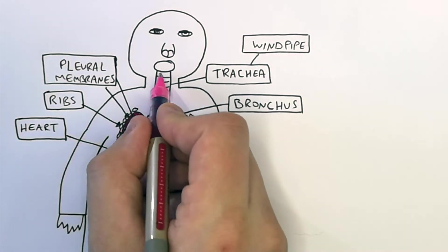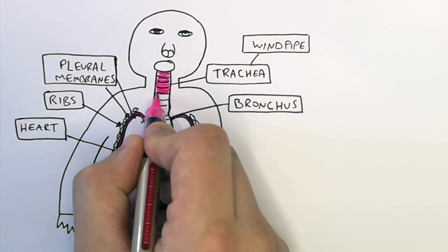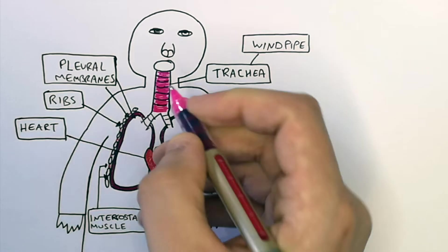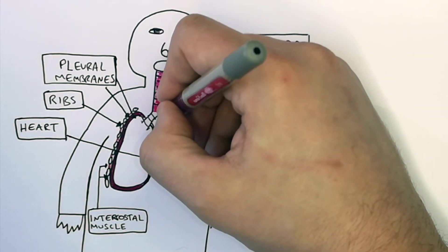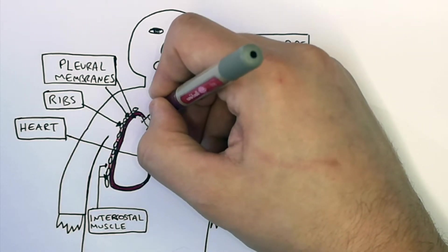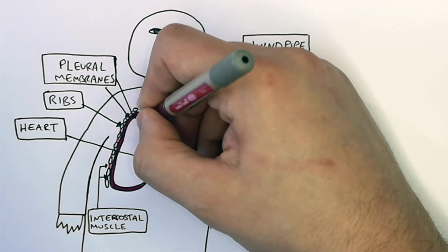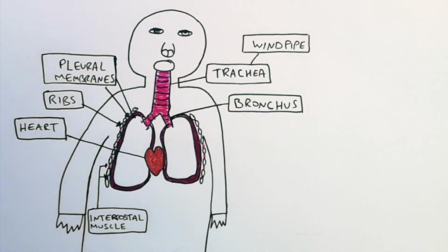We breathe air in through our nose and our mouth and that then goes down the trachea. The trachea then splits into two tubes called the bronchi, where air will move down into each lung via the bronchi.